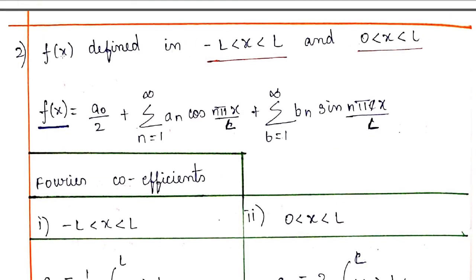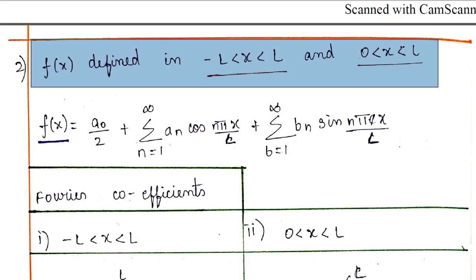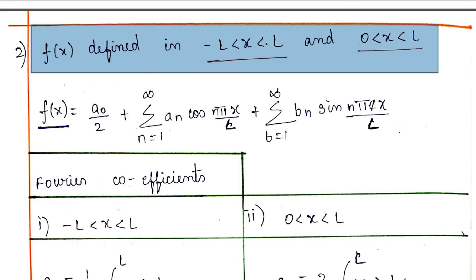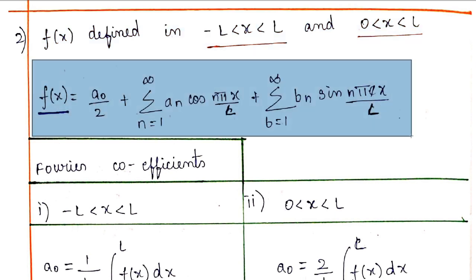f of x has three cases: minus l to l and 0 to l, where x is defined. f of x is defined in these limits. So we have minus pi to pi, and we have minus l to l.